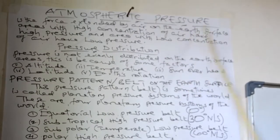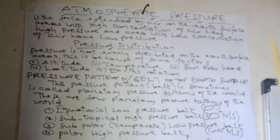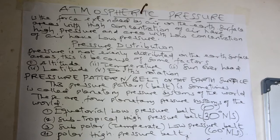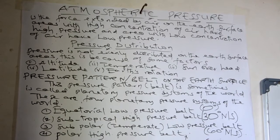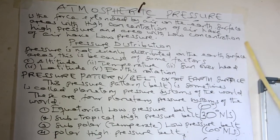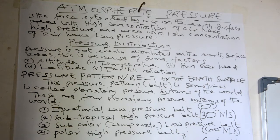Pressure is the force exerted by the air on the earth's surface. Areas with high concentration of air have high pressure and areas with low concentration of air have low pressure. Therefore, this pressure is the force that causes the air to move from an area of high pressure to an area of low pressure.